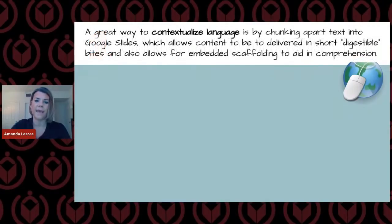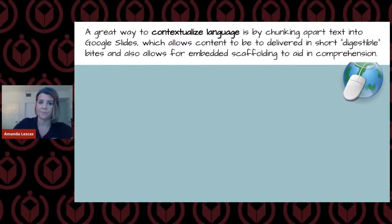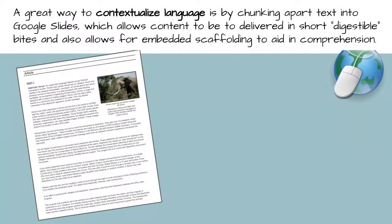Here's another example. The article discussed the idea of a ripple effect, which is a pretty difficult concept. So we created a slide, added a definition of that word for the students, and then inserted a GIF so students could have a visual representation of the word itself. When we chunk text, we want to contextualize that language, and a great way to do that is through Google Slides. You can take a specific part of a text, add it into a single slide as a short digestible bite, and then embed specific scaffolding into that slide.